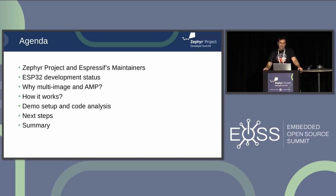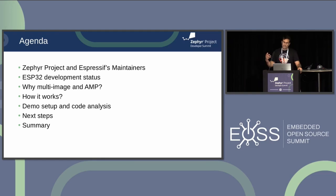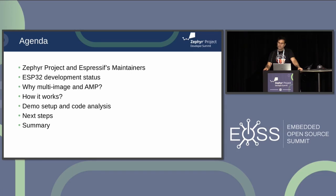The main idea of the talk today: I would like to talk about the Zephyr project and Espressif's maintainers — there are just a few people working on that — about ESP32 development status, then talk about the multi-image support and AMP, how it works, and I prepared some demo that I would like to show you, run through the code, and talk about the next steps for ESP32 support and asymmetric multiprocessing.